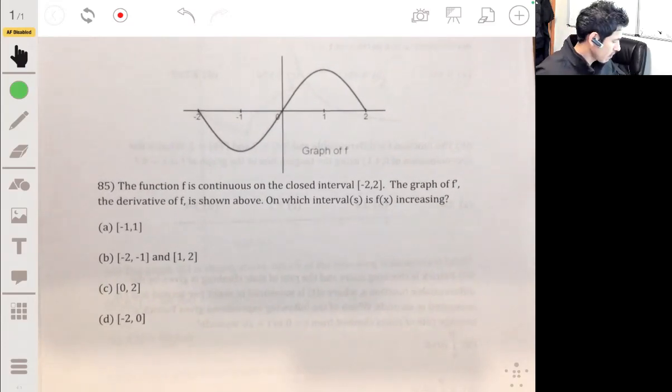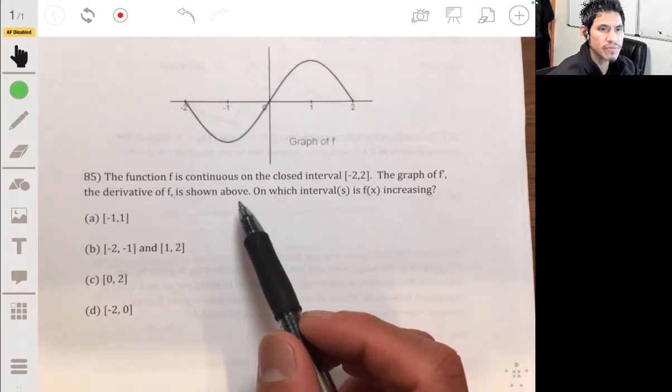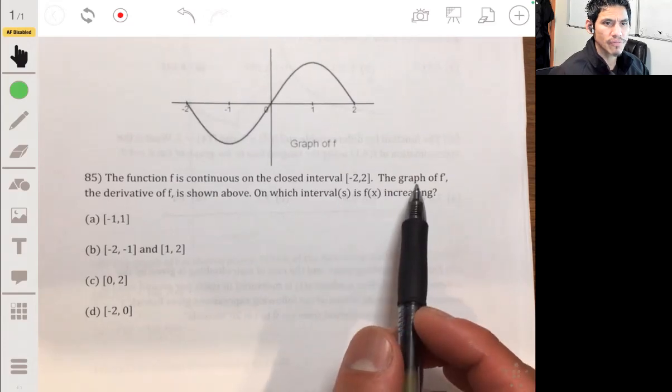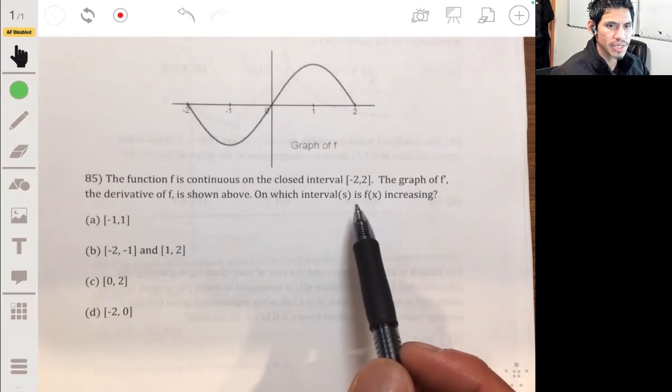Problem 85. Function f is continuous on the closed interval negative two to two. The graph of f prime, the derivative of f, is shown here. On which interval is f of x increasing?